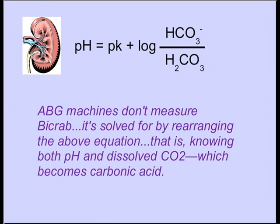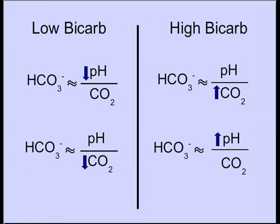It does that by rearranging this formula. Here's another way of rewriting that previous formula, known as the Henderson-Hasselbalch equation, where the ratio of carbon dioxide to pH has to do with how the blood gas machine calculates the bicarb.